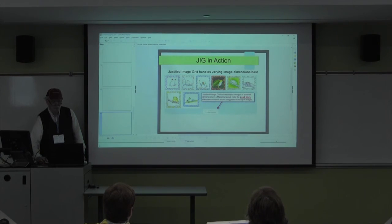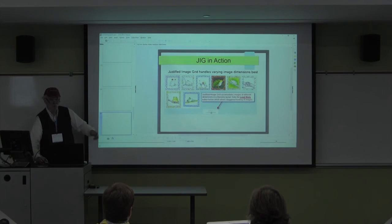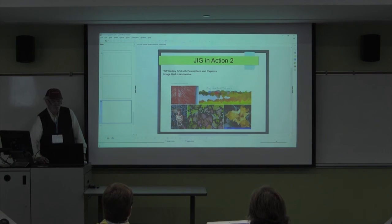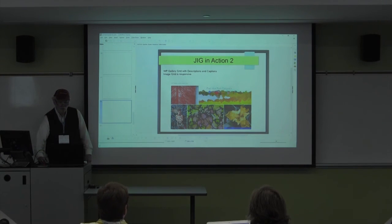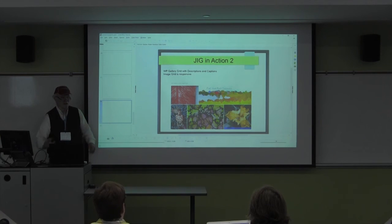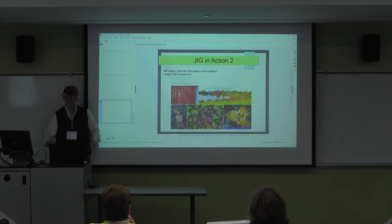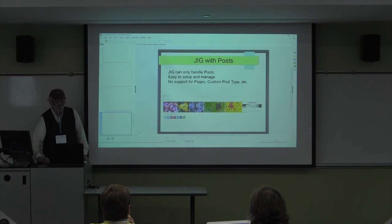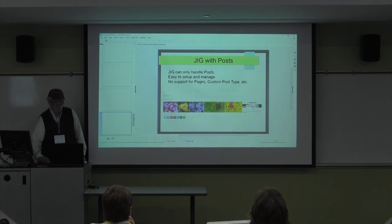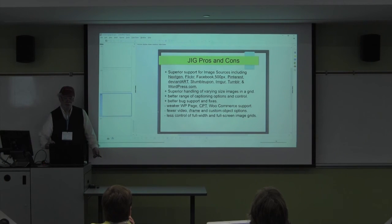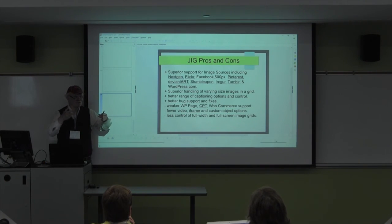Here's Justified Image Grid in action — you can see these are different-sized images: portrait, landscape, and square. It handles them all and puts them into a nice overall grid, with a load more button that will load additional images. The JIG developer responded within a day when I told him I was having a problem for this presentation, quickly explaining the fix. The Theme Punch people for Essential Grid have been slower to respond and I still have outstanding problems.